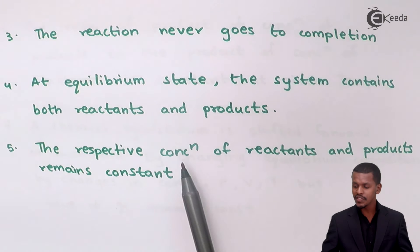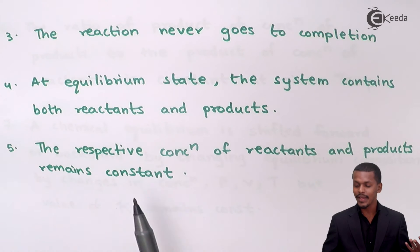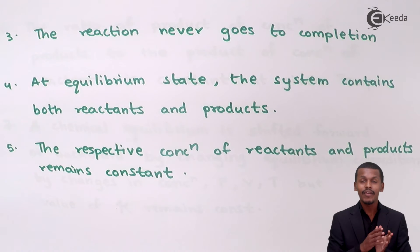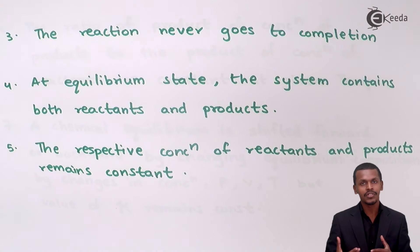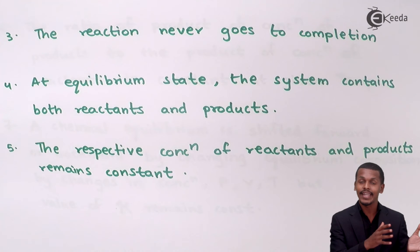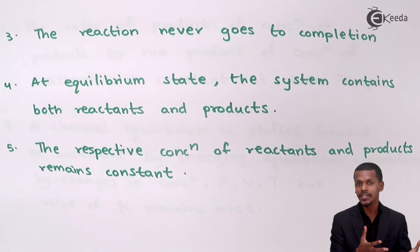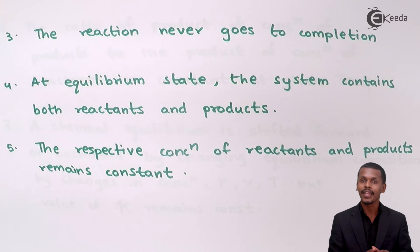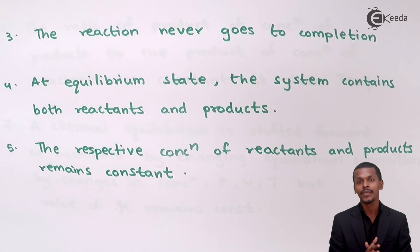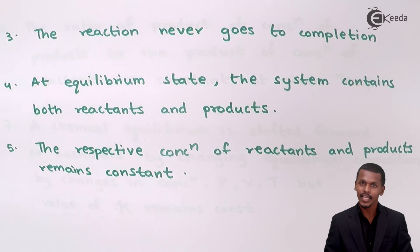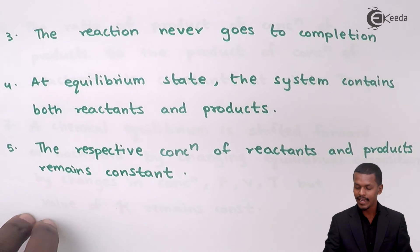The respective concentrations of the reactants and products remain constant at chemical equilibrium. The values of concentration of reactants and products stay constant, and this is only possible when a chemical reaction is attaining chemical equilibrium in a reversible process.